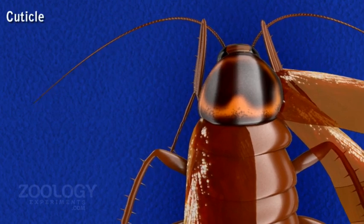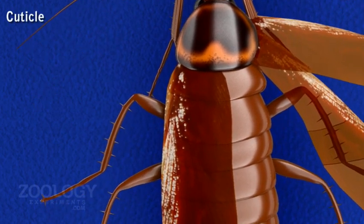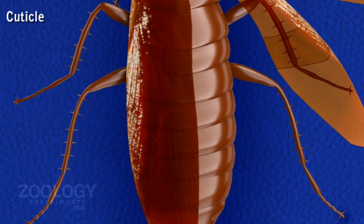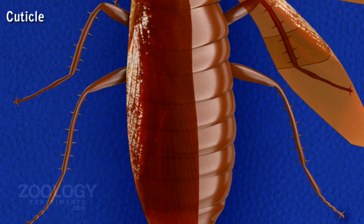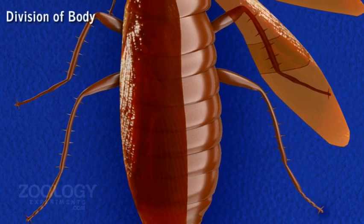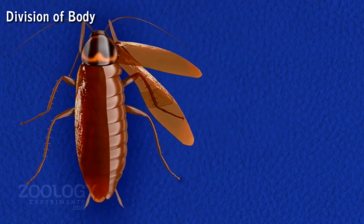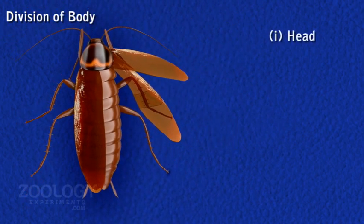Cuticle or exoskeleton: the entire body is covered externally by a non-living, brown colored, hard jointed cutaneous exoskeleton composed of several plates or sclerites. It is formed by the cuticle of the body wall and is secreted by the underlying hypodermis.